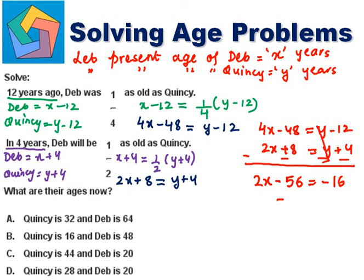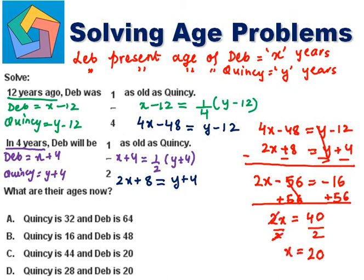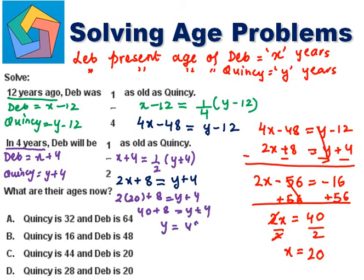We can add 56 on both sides to solve for X. So we have 2X is equal to 40. Divide by 2: X is equal to 20. And for Y, let us solve now. I can substitute in any of the equations. Let me substitute: 2 times 20 plus 8 is equal to Y plus 4. 40 plus 8 is equal to Y plus 4. Y is equal to 48 minus 4.